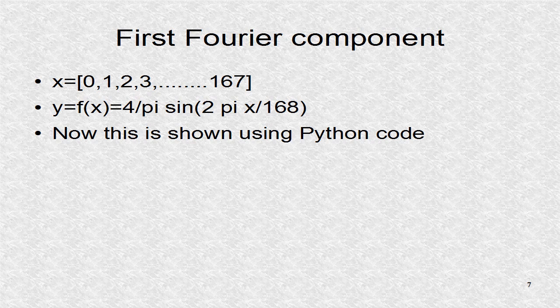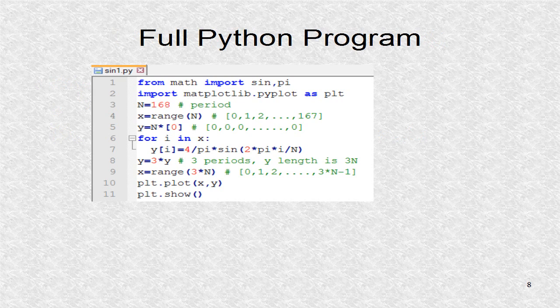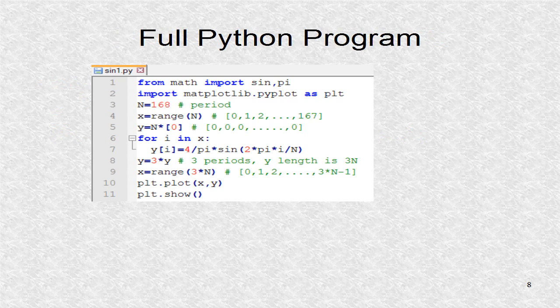We need 168 samples according to this function. This is the Python program to plot the first Fourier component.